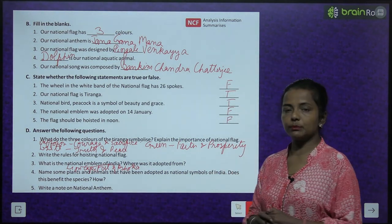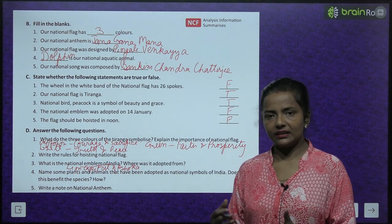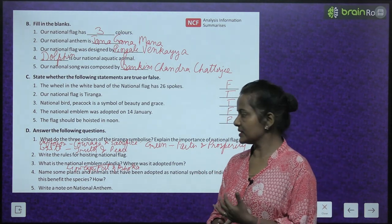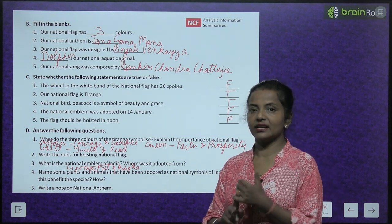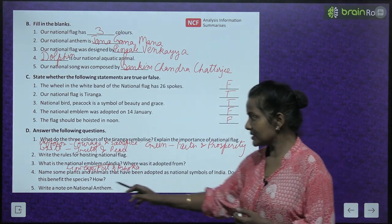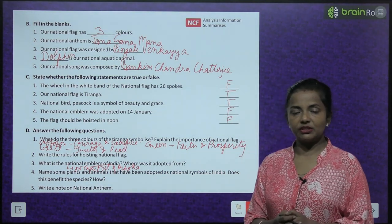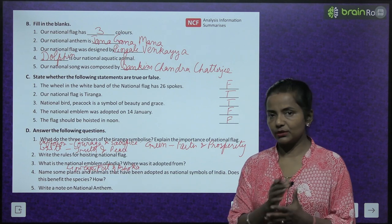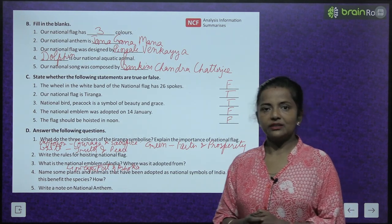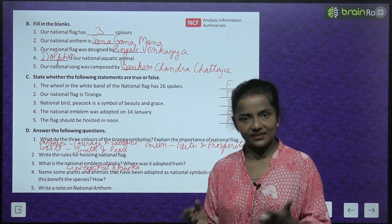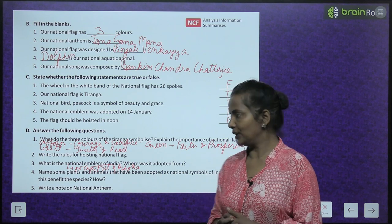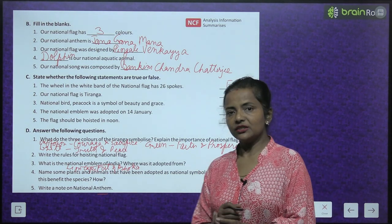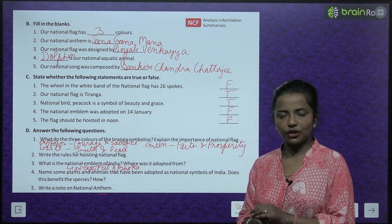Name some plants and animals adopted as national symbols of India: the national tree is the banyan tree, the national flower is the lotus, the national animal is the Royal Bengal Tiger, and the national bird is the peacock. Protecting these national symbols is important because it prevents them from becoming endangered or extinct. Write a note on the national anthem Jana Gana Mana, who composed it and when it was adopted.